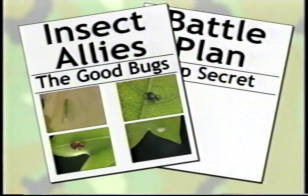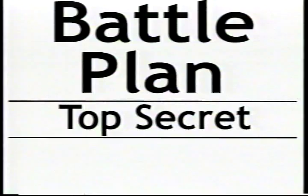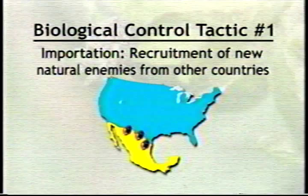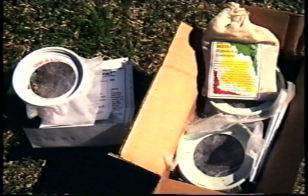Now that we have met our insect allies, how can they be mustered for further service in the war against insect pests? This can be done using a three-part battle plan. First, natural enemies can be imported from other countries into the U.S. to combat a specific pest. Several natural enemy warriors have been imported from Mexico, the native home of the boll weevil. Unfortunately, none survive to give much control.